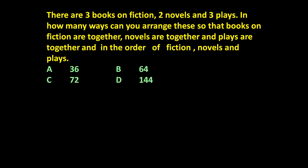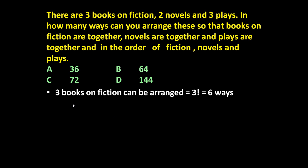To answer such questions, let us go step wise. There are three books on fiction. These three books on fiction can be arranged in factorial three ways. Factorial three means three into two, which is equal to six ways. So three books on fiction can be arranged in six ways.